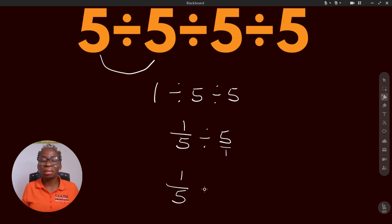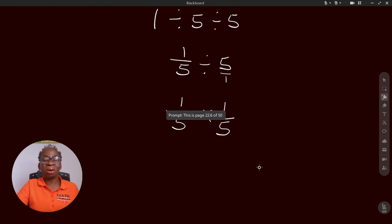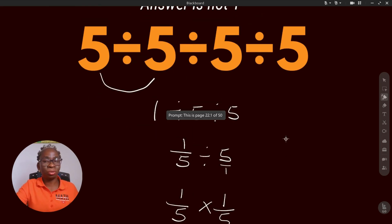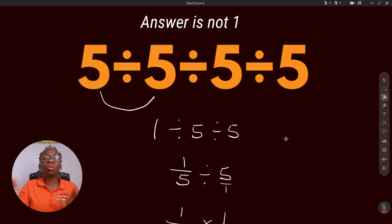Don't forget that 5 is the same thing as 5 over 1. So this means 1 divided by 5 times 1 over 5. And 1 over 5 times 1 over 5: 1 times 1 is 1, and 5 times 5 is 25.